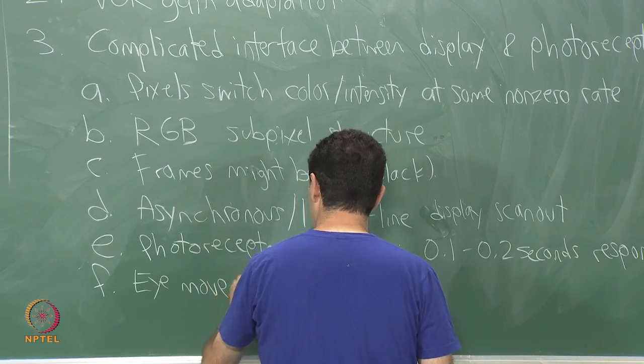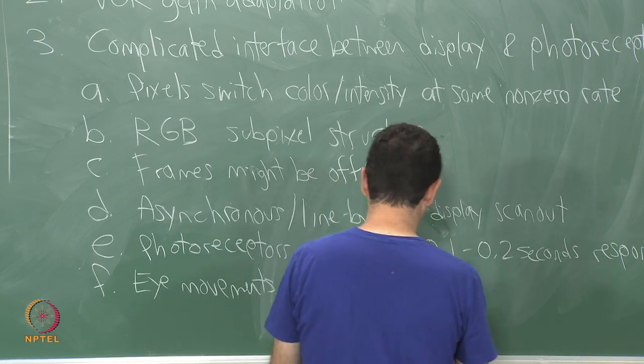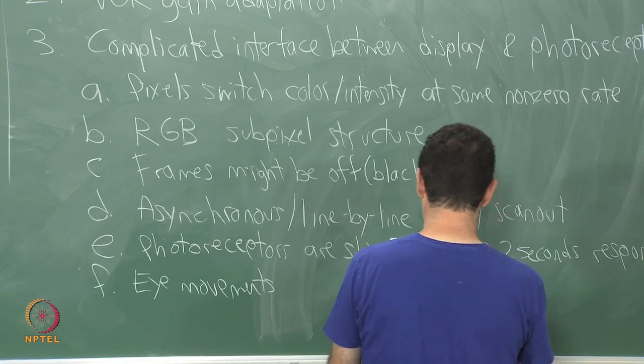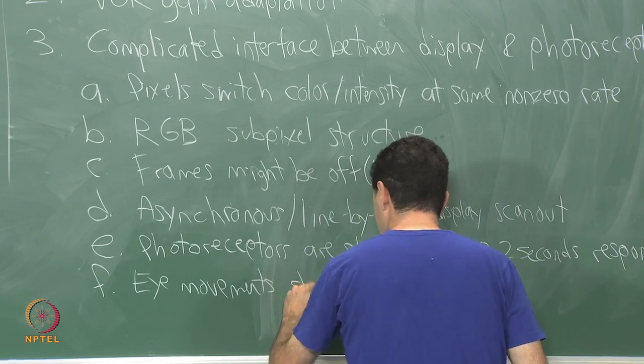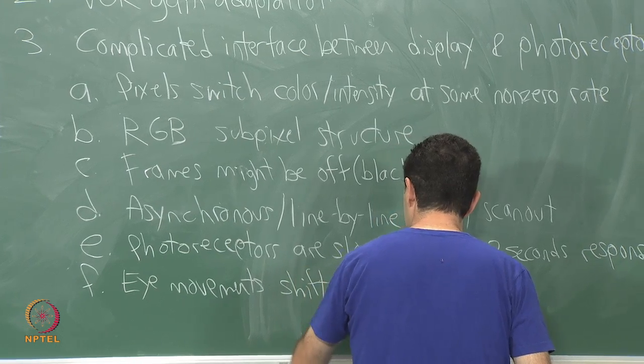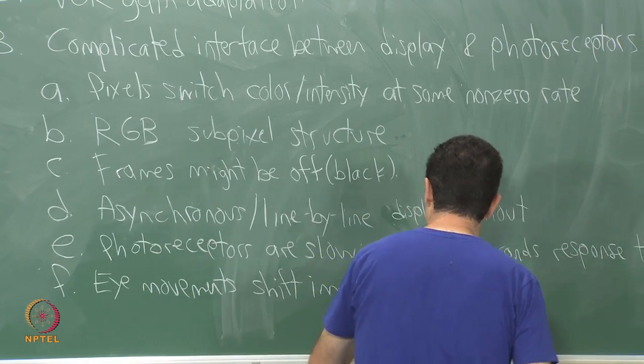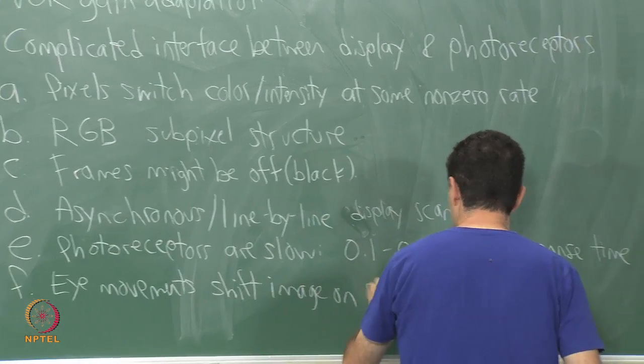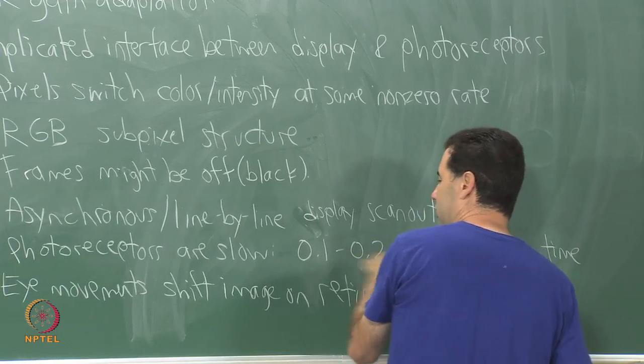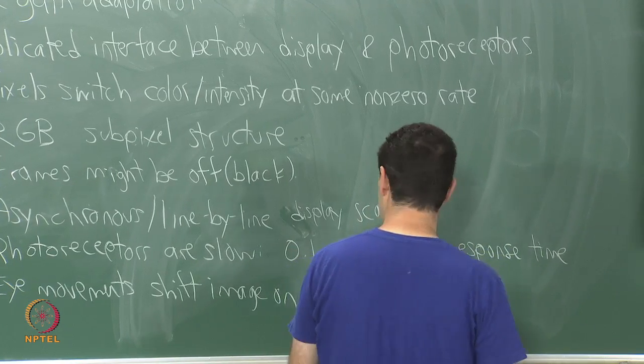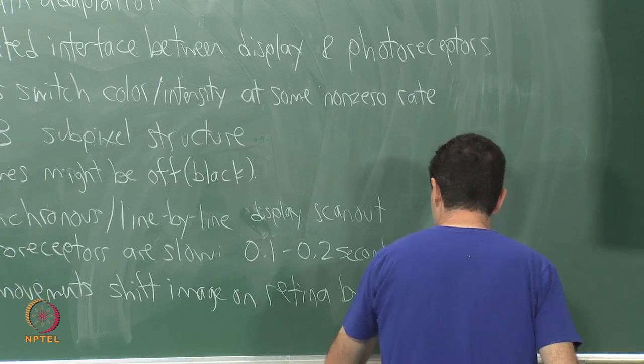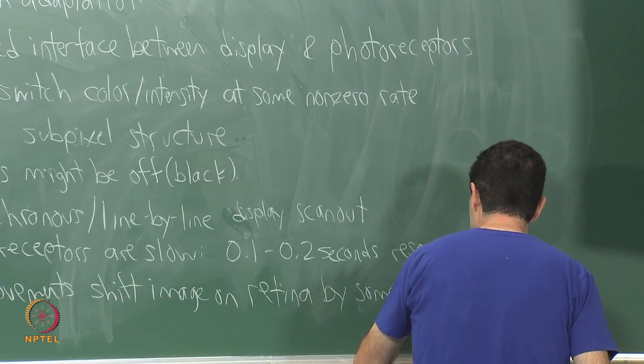Eye movements and object movements as well shift the image effect on the retina while you also have very slow photoreceptor response. By some amount it cannot be perfect.